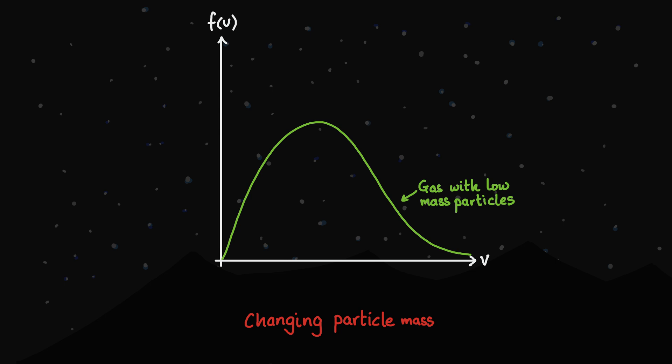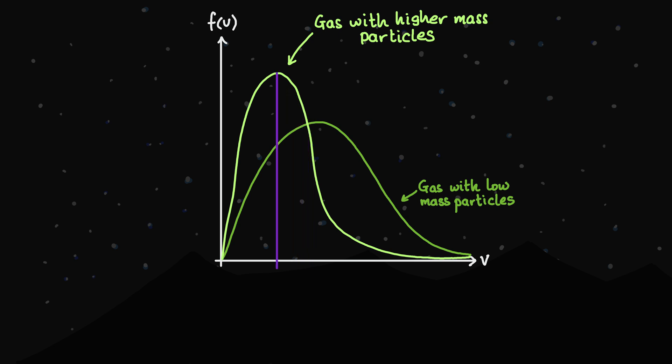As we consider gases with particles of higher mass, the distribution shifts this way. On average, the particles move more slowly. This makes sense, because if the two gases are at the same temperature, then the one with heavier molecules will generally result in those molecules moving more slowly.